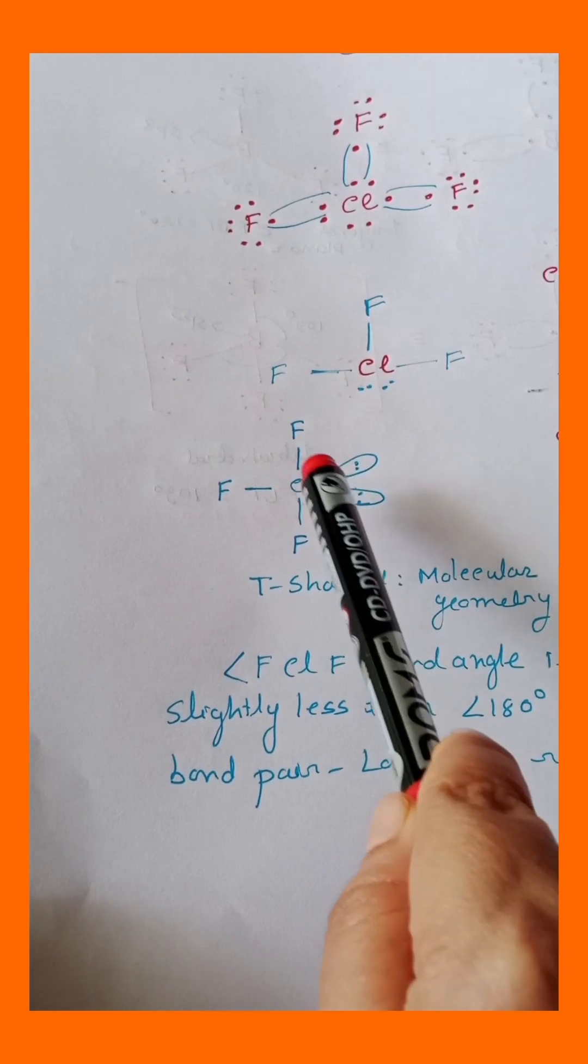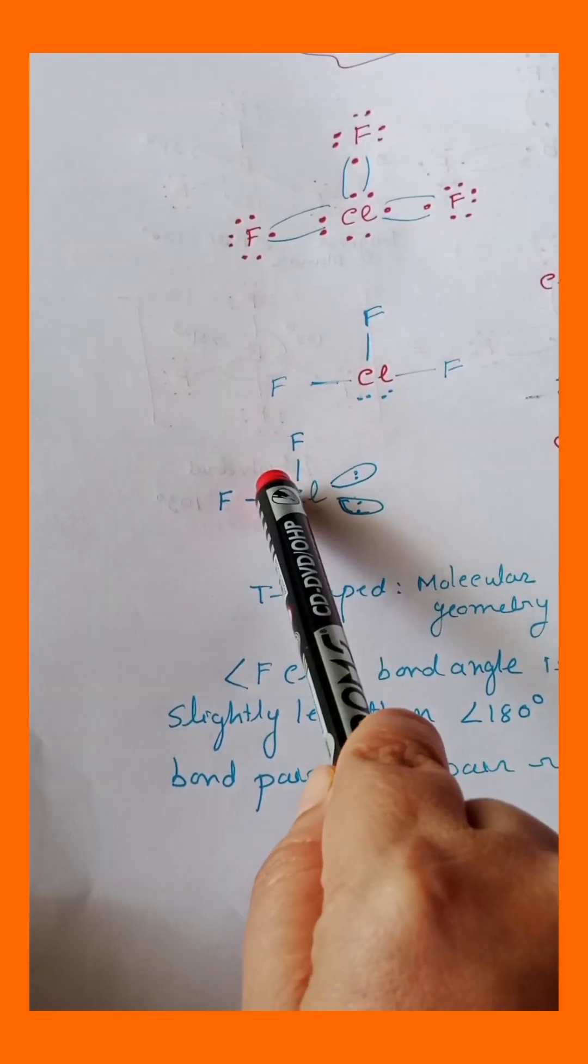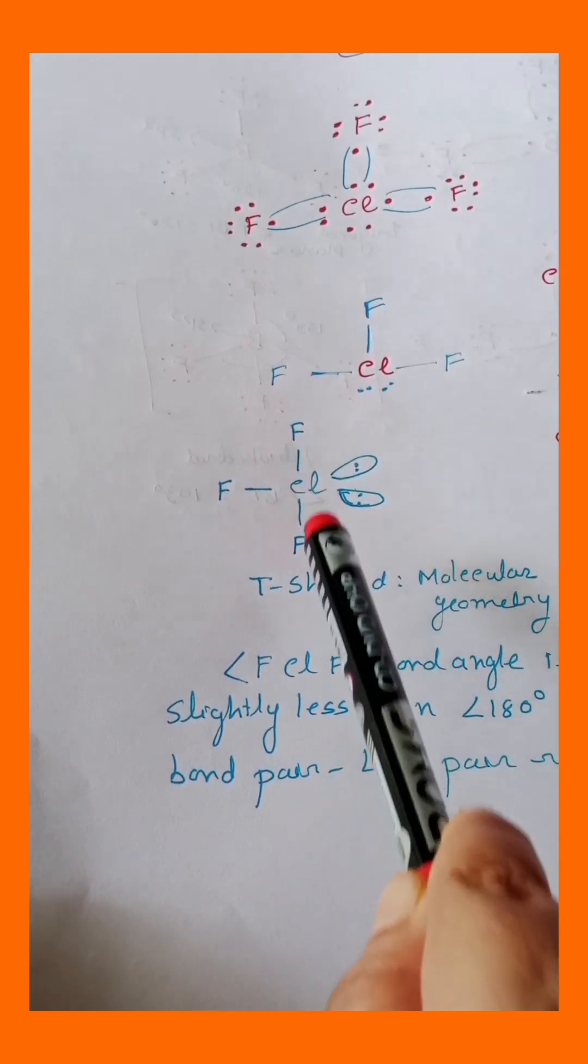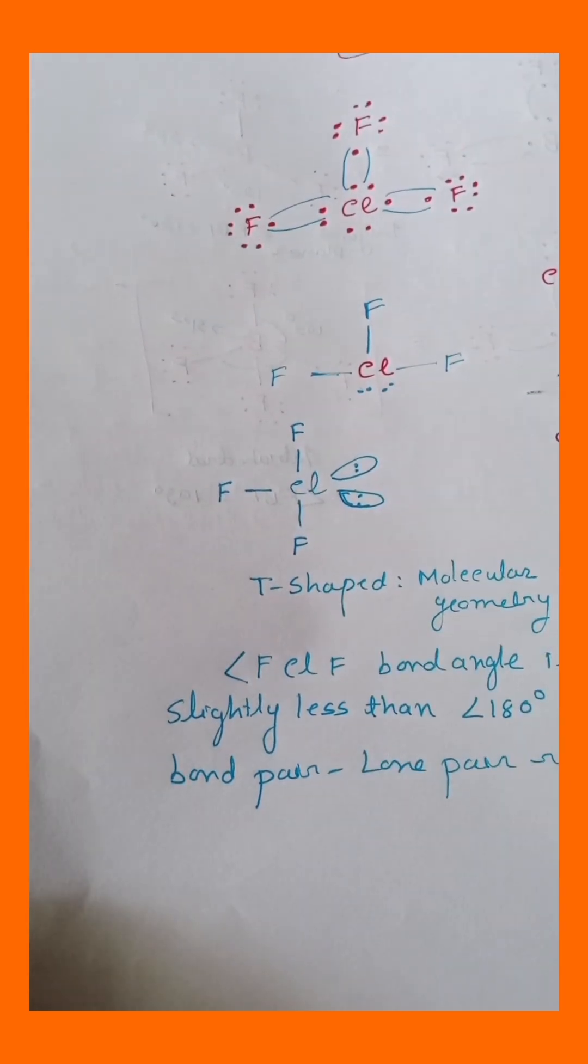At the same time there is a repulsion between the lone pair and bond pair, with the bond angle being 90 degrees. So that's why the fluorine-chlorine-fluorine bond angle will be less than 180 degrees.